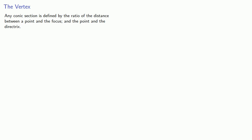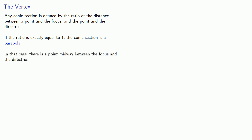Any conic section is defined by the ratio of the distance between a point and the focus, and the point and a directrix. If the ratio is exactly equal to 1, the conic section is a parabola. In that case, there is a point midway between the focus and the directrix. This will be the point on the curve closest to the directrix and focus. This point is the vertex.